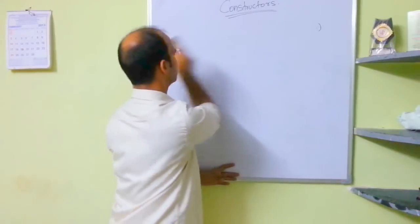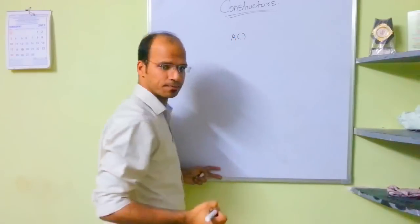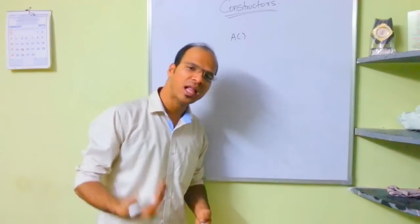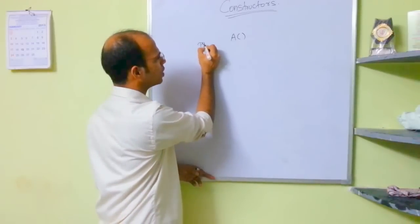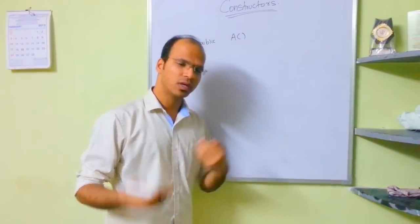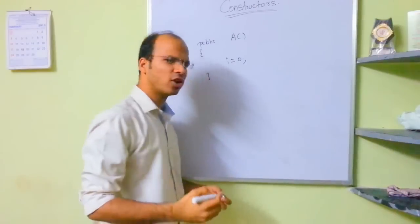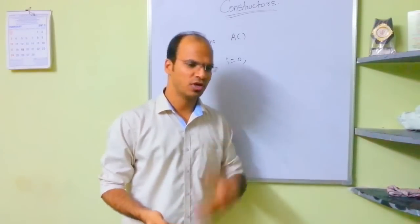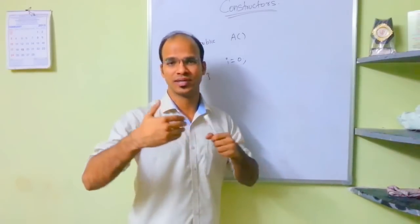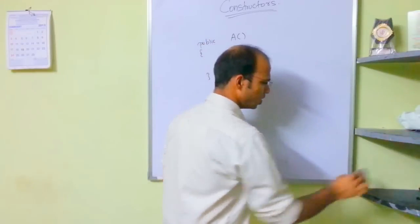Let's define a constructor. To define a constructor, you provide the constructor name — which is A — with brackets. Unlike regular functions, constructors return memory, not a value, so you don't provide a return type. You simply write: public A(). Inside you can do any initialization tasks. For example, you can initialize i to zero directly. You can use the constructor to initialize variables, open files, create sockets, create database connections — all initialization tasks go in the constructor.